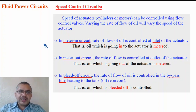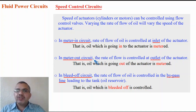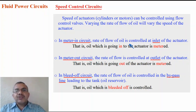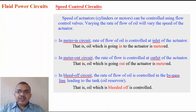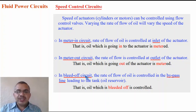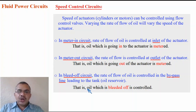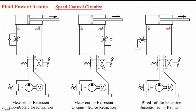There are three different types of speed control circuits depending on the position where we place the flow control valve. First is the meter-in circuit, where the rate of flow of oil is controlled at the inlet of the actuator. In meter-out circuits, flow is controlled at the outlet of the actuator. In bleed-off circuits, flow is controlled in a bypass line going towards the reservoir tank.